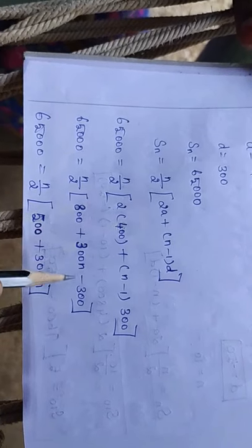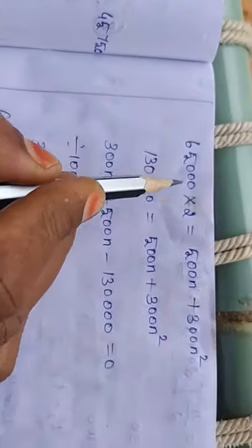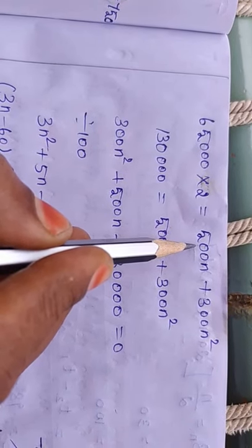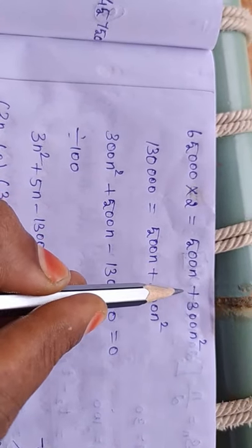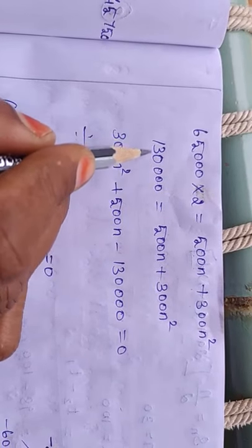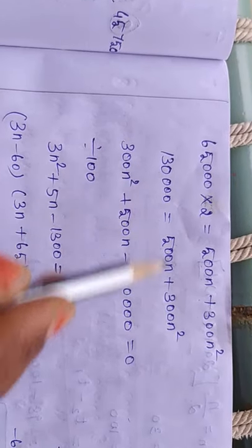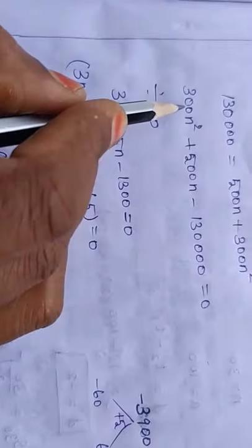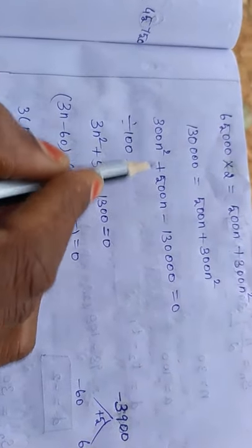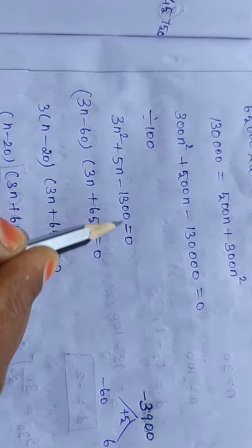Rearranging the terms: 800 minus 300 gives 500n, plus 300n². Multiplying both sides: 1,30,000 = 500n + 300n². Moving to one side and dividing by 100: 3n² + 5n - 1300 = 0.